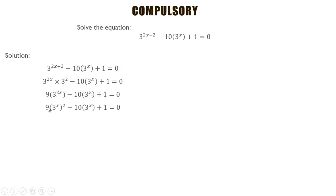We apply the laws of indices once again. Recall that if you have a^(m^n), it is the same as a^(mn). That is what gives us this term. We can see this is a quadratic equation in 3^x.